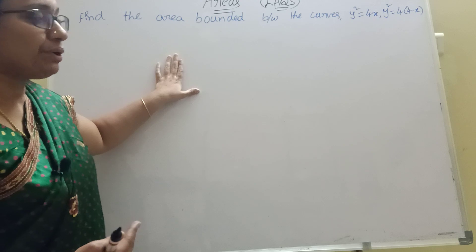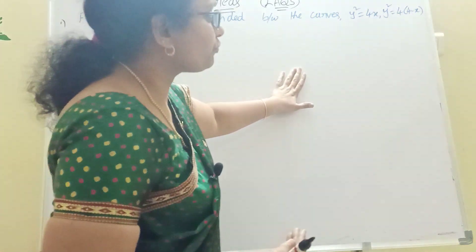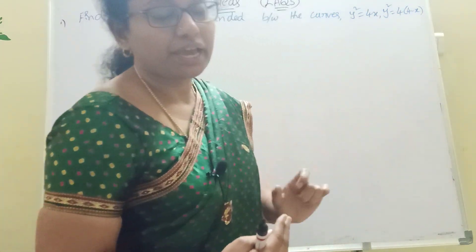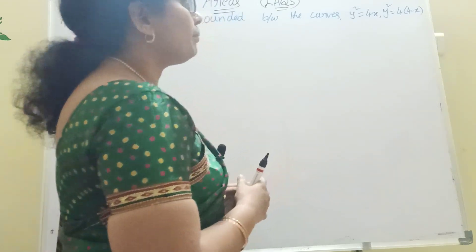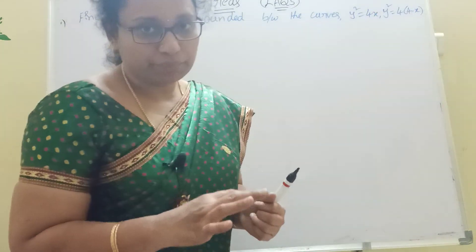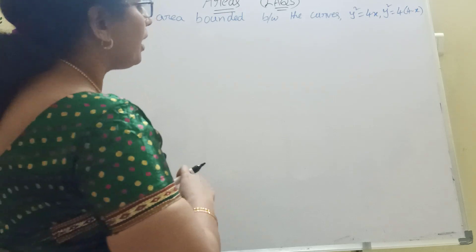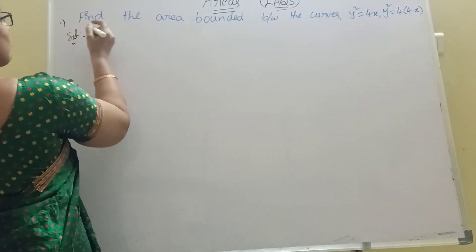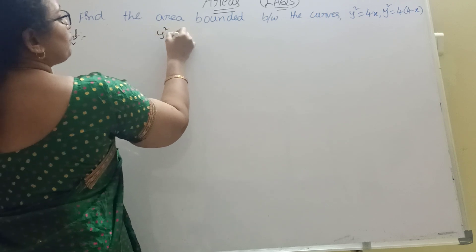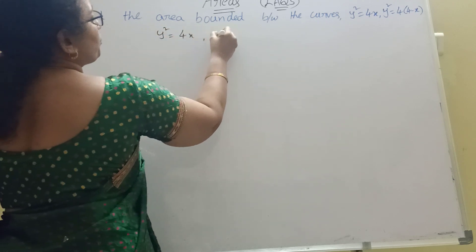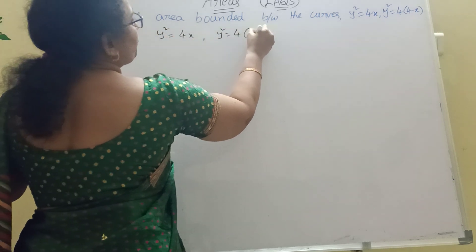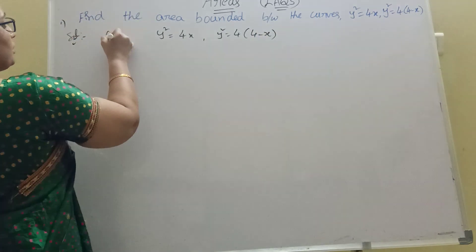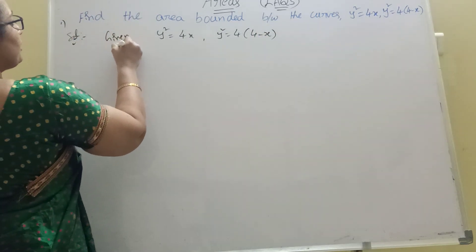Find the area bounded between the curves: y squared equal to 4x, and y squared equal to 4 into (4 minus x). These are the given curves.